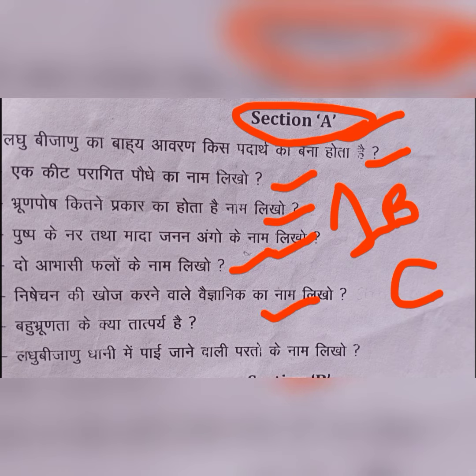Section A mein aapko ek liner batana hai aur laghu bijjanu dhani mein paai jaane wali patto ke naam batane hain. (Section A requires you to give one-liner answers and name the leaves found in the pollen grain.)